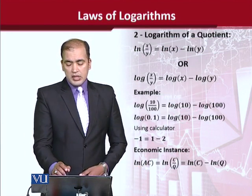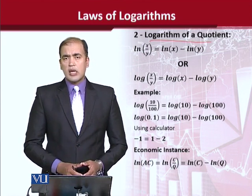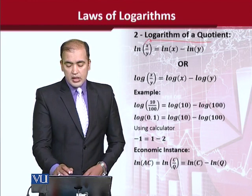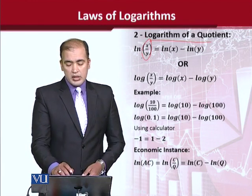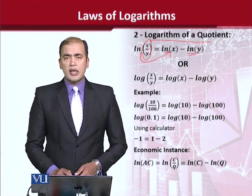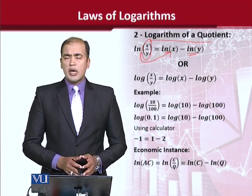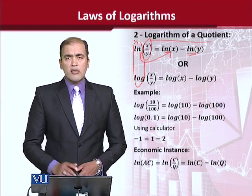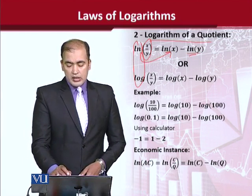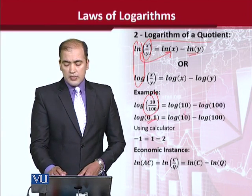Now let's talk about the second rule of logarithms — the quotient rule — when we are confronted with a quotient log to calculate. We have the log of a quotient equal to the natural log of x minus the natural log of y. In the product rule we used plus, and in the quotient rule we use minus — that's the only difference. Both natural log and log to the base 10 are equally applicable. As a numerical example, if we have 10 divided by 100, we get 0.1, and this value will remain the same.